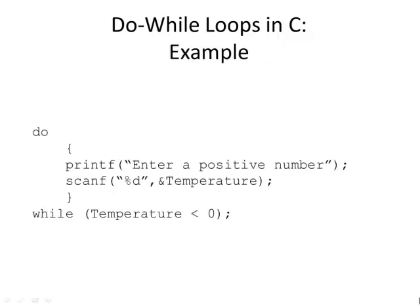In this example, we're asking the user to enter a positive number. Printf prints something on the screen and scanf reads the keyboard into a variable — in this case, temperature. It asks for a positive number, the user types something in, and then it tests the condition: is temperature less than zero? If they gave a negative number, the condition is true and it goes back up and asks again. When they enter a positive number — temperature greater than or equal to zero — it breaks out of the loop. We use a do-while here because we definitely want to ask for input at least once.